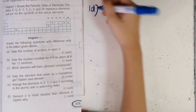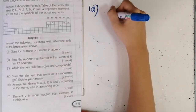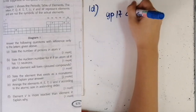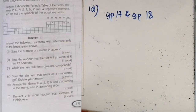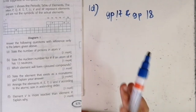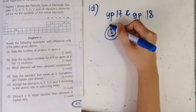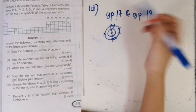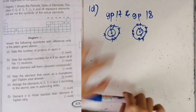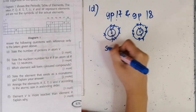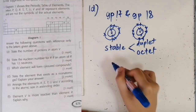Question 1d: state the element that exists as a monoatomic gas and explain your answer. Elements in gaseous states are actually found in group 17 and group 18. However, group 17 elements cannot form monoatomic gas because they cannot be stable on their own — they have seven valence electrons, which is not stable. Anything with seven valence electrons is incomplete. Group 17 needs one more electron to achieve the stable octet or duplet electron arrangement.